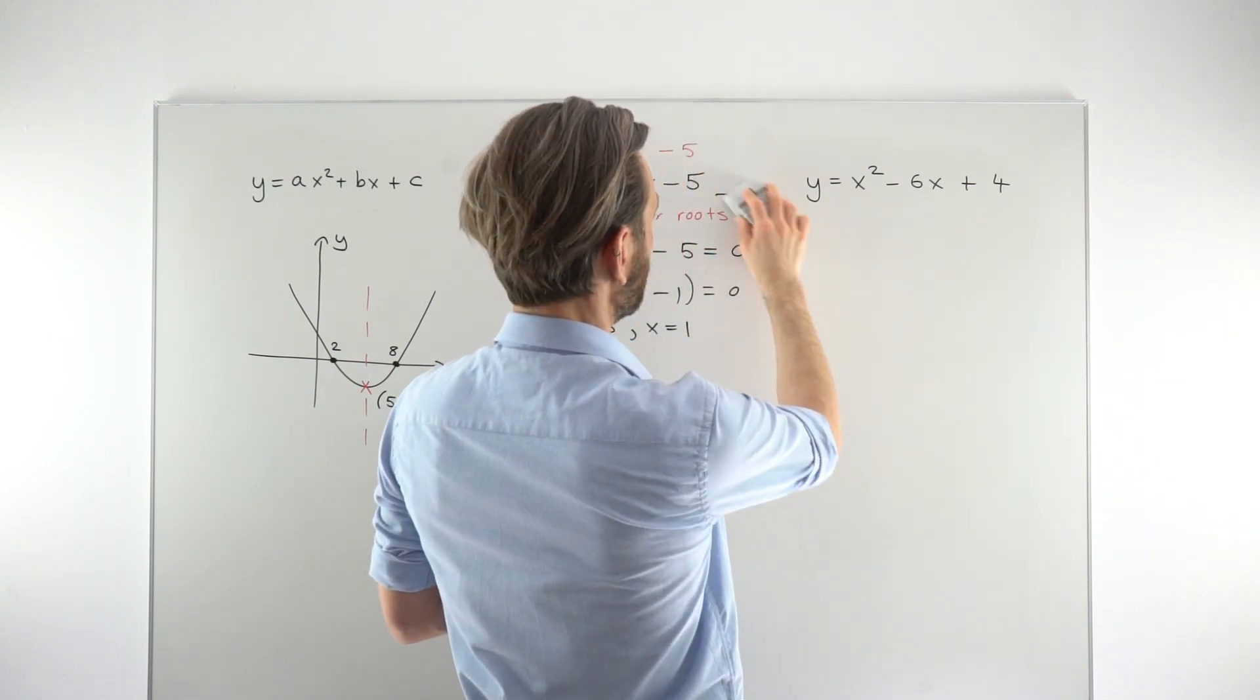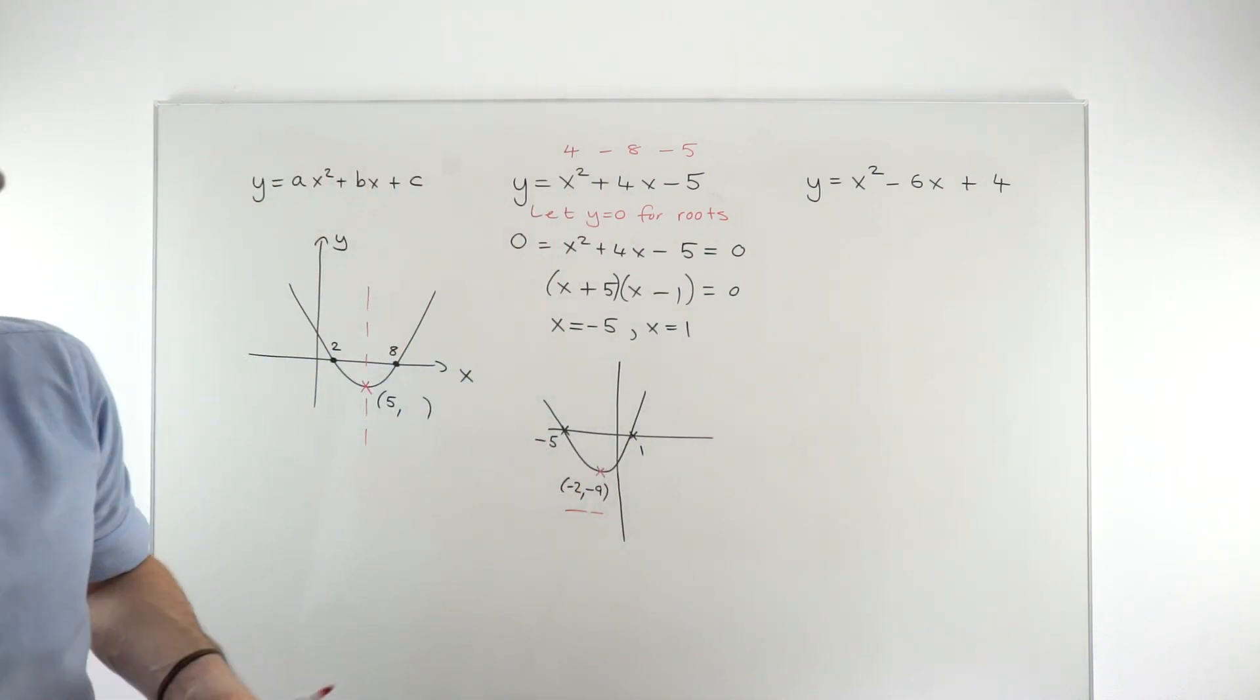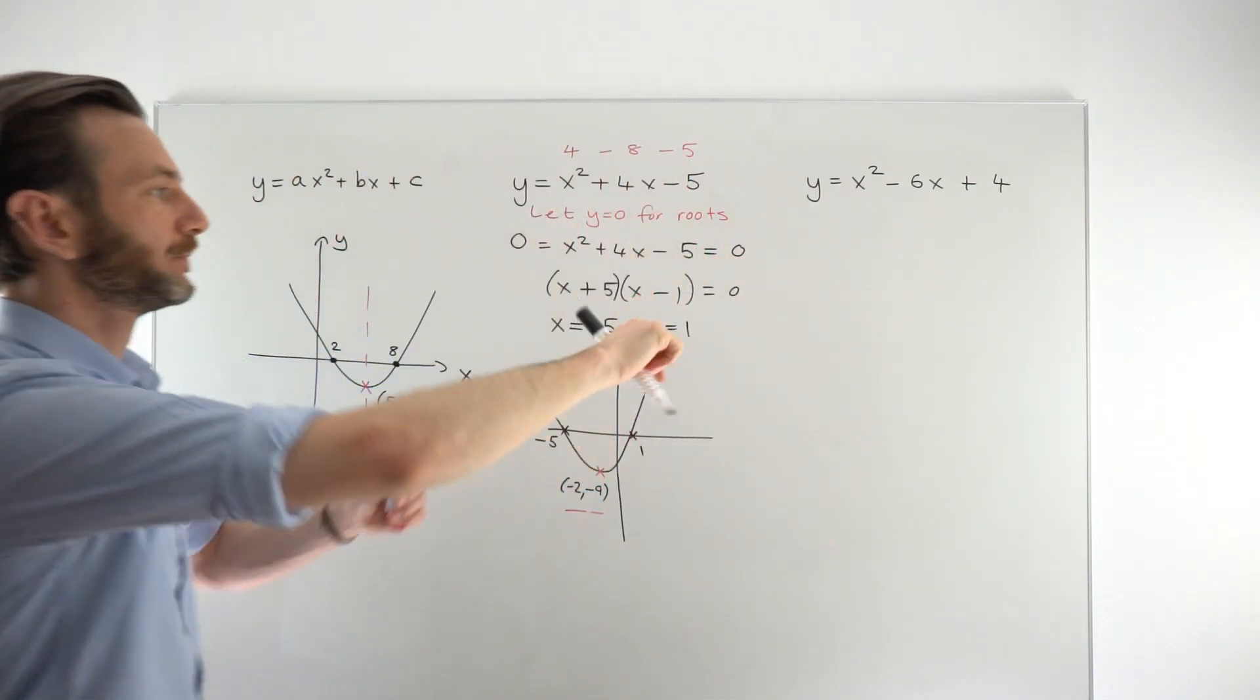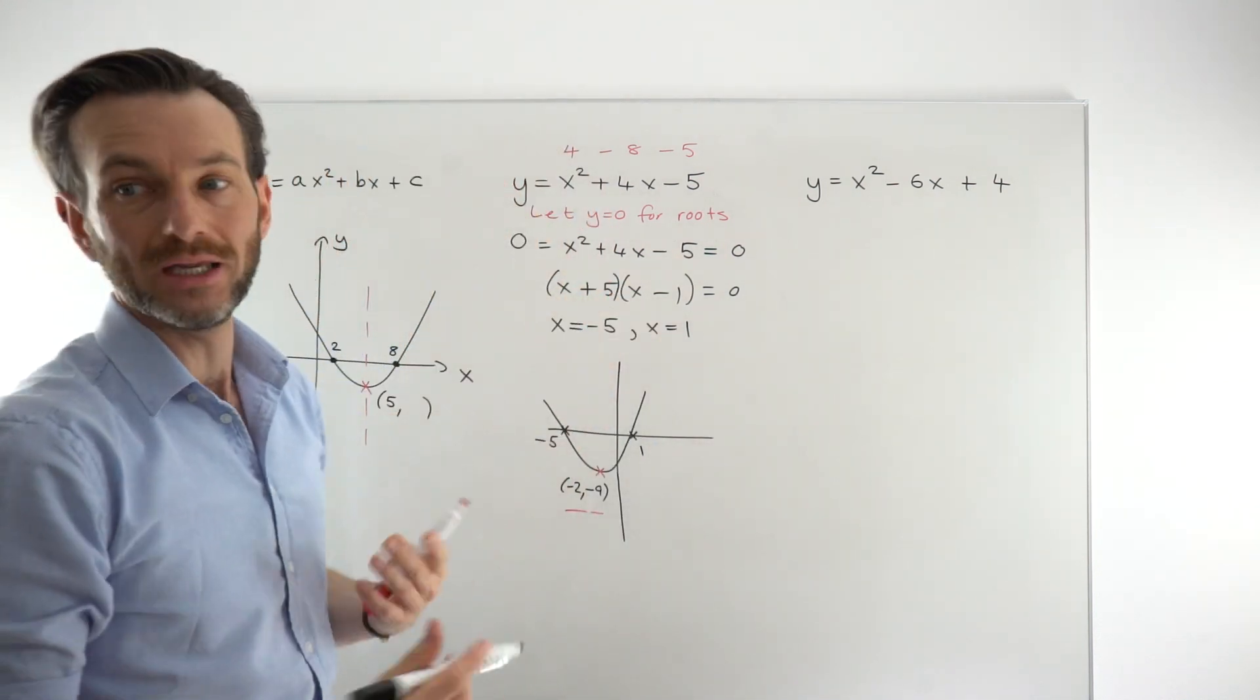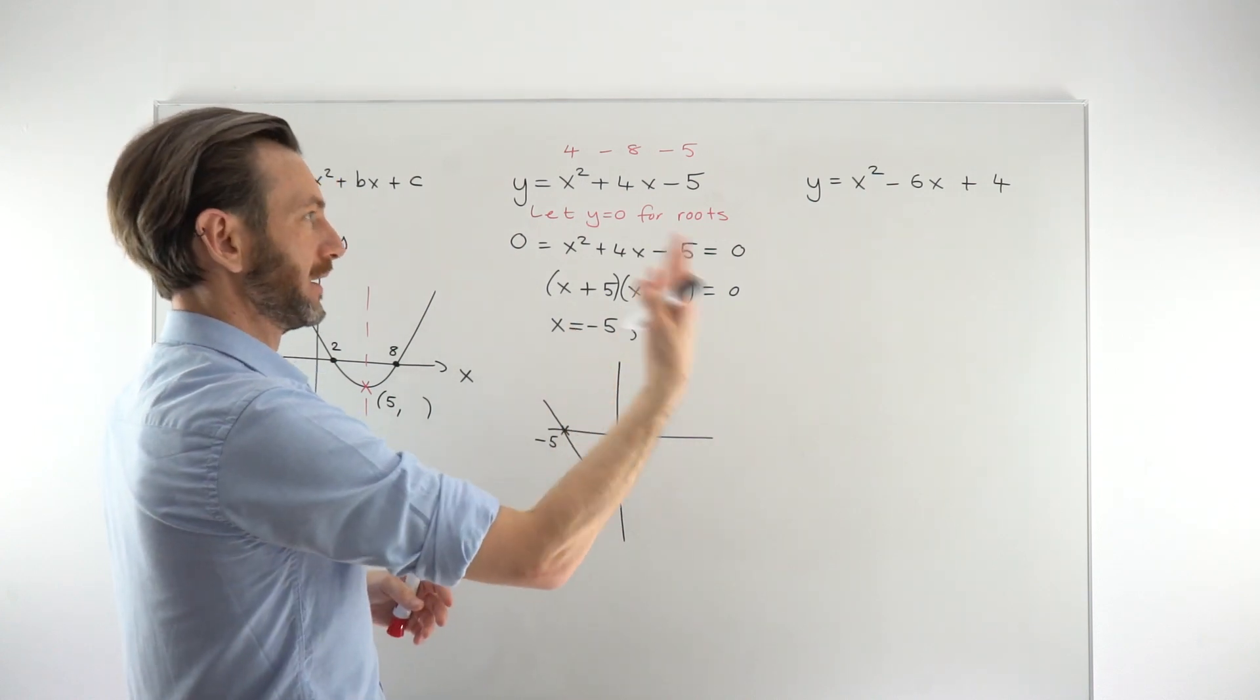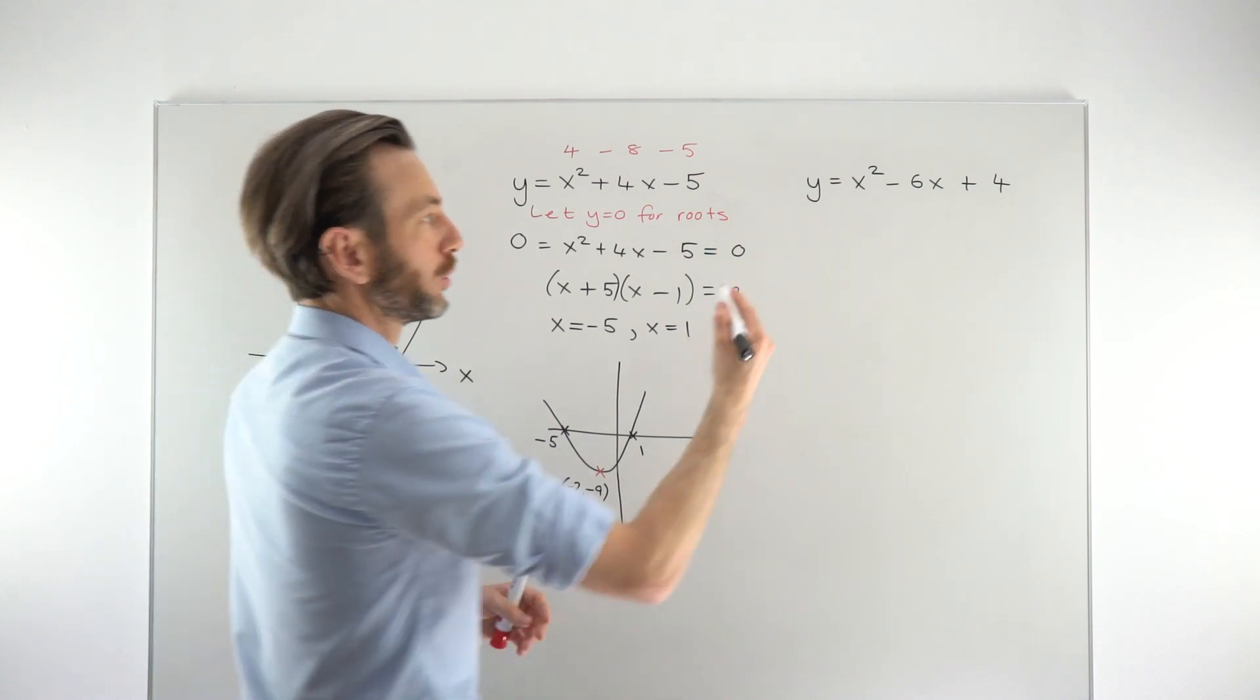For the other example, we're just going to use the second method, the complete and the square method. Partly because if you look at this guy here, if we wanted to find the roots like we did over here, we're going to run into a problem, because this is a trinomial, but it would not factorize into two brackets. And we need to factorize it to be able to solve, to get the roots, and then to interpret those, to get the middle, and then to get the turning point. We're not going to do that.